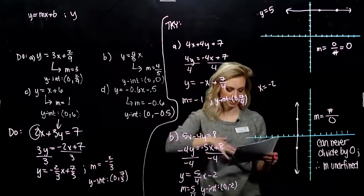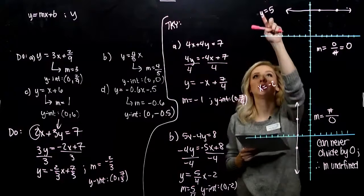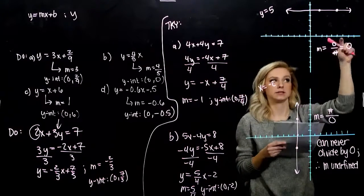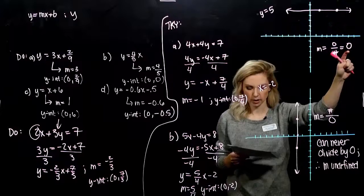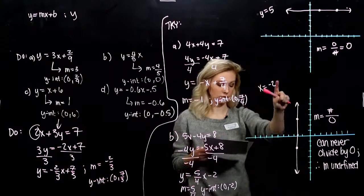So in that little box, just to sum it up, slope of a horizontal line, y equals some constant, is always zero. Slope of a vertical line, when it's x equal to some constant, is always undefined.